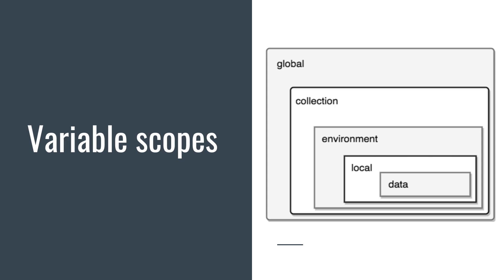There are a lot of variables in Postman and it's not always clear what you should use or when you should use it. This is what I'm trying to do in this video — explain what is out there and when it makes sense to use a certain variable type. Let's get started. What we're looking at now are the different variable scopes available: global, collection, environment, local, and data.